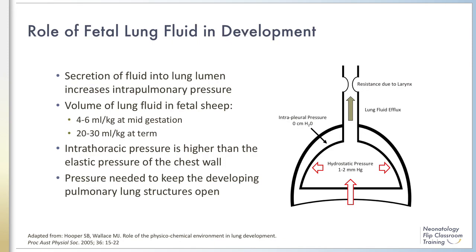Fetal lung fluid significantly influences lung growth. Proper development of the lung is dependent on the presence of both fetal lung fluid and amniotic fluid. Fetal lung fluid is maintained within the developing lung by resistance at the laryngeal level, primarily the glottis. The upper airway acts like a gatekeeper, controlling the resistance to efflux of fluid out of the lung during non-breathing periods. This fluid maintains an airway volume similar to the functional residual capacity, equaling about 20 to 30 milliliters per kilogram at term gestation. Fetal lung fluid also maintains a distending pressure of 1 to 2 millimeters of mercury, which keeps the fetal lung open and is vital for lung growth.